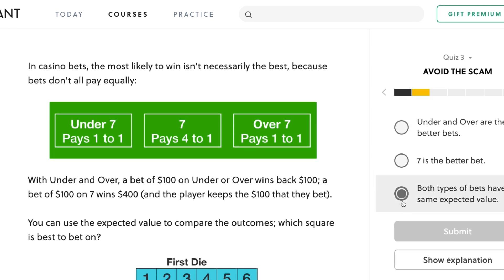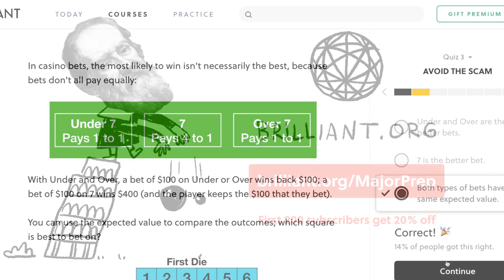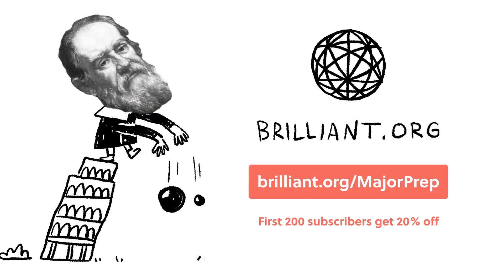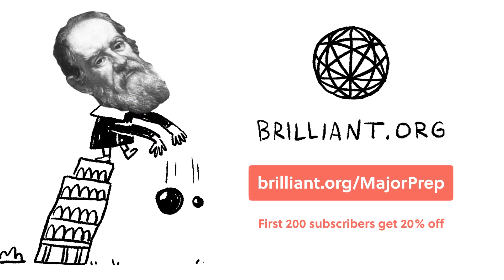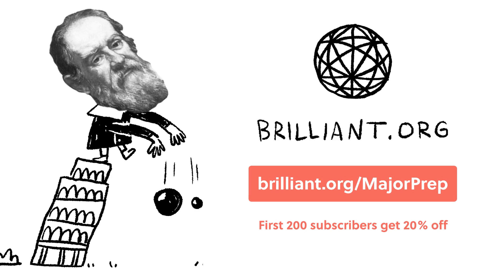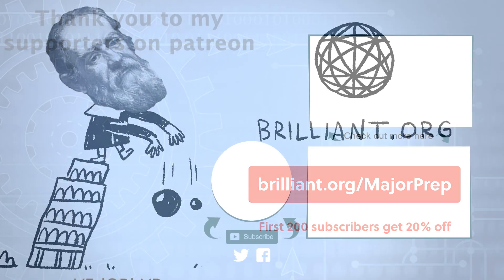So if you want to get started right now and support the channel, you can click the link below or go to brilliant.org slash major prep. Plus the first 200 people to sign up will get 20% off their annual premium subscription. So again links are below, and with that we're going to end that video there.